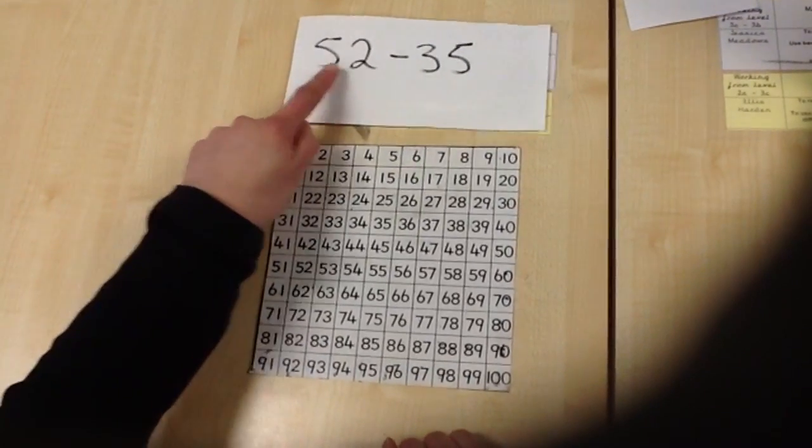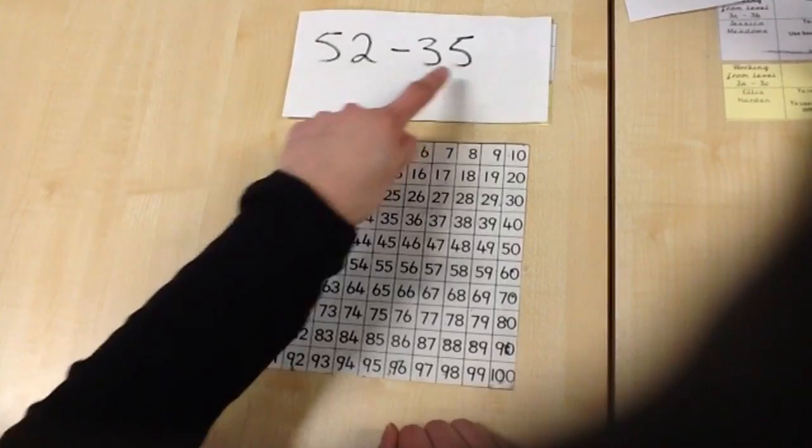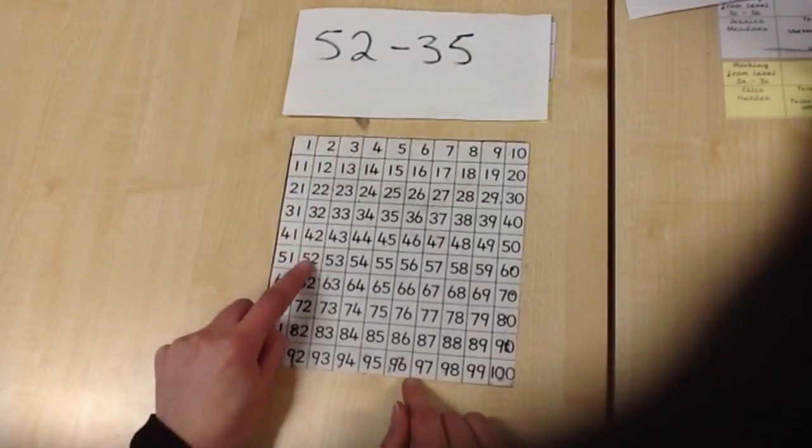OK, the next question is 52 take away 35. So again, I find 52 on my 100 square.